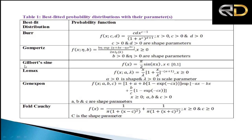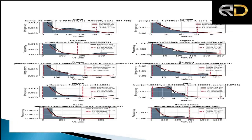The best-fitted distributions identified include the Burr distribution, Gumbel, Gilbertson, Lomax, Generalized Exponential, Generalized Exponential Pond, and Folded Cauchy distributions — among the top selections from 123 distributions across the top 10 countries. Each distribution provides location parameters (mean), scale parameters (standard deviation), and shape parameters as applicable.